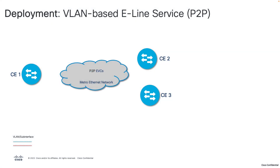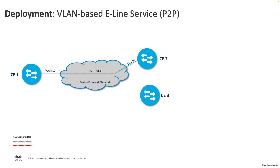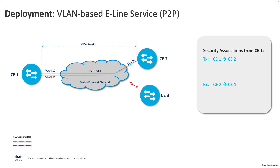Now let's look at common WAN MACsec deployment scenarios. One common use case is VLAN-based E-line service. An E-line service is a point-to-point Ethernet virtual circuit that provides a dedicated path between two endpoints. This service is ideal for connecting campuses, campus to branch, or campus to data center, and MACsec is applied over this link to ensure data integrity and confidentiality at Layer 2.